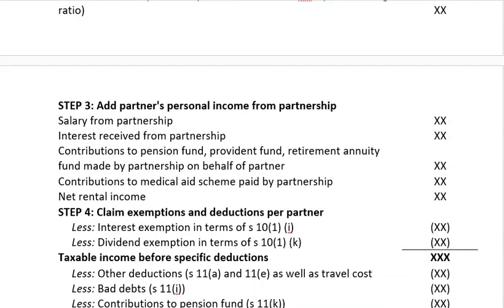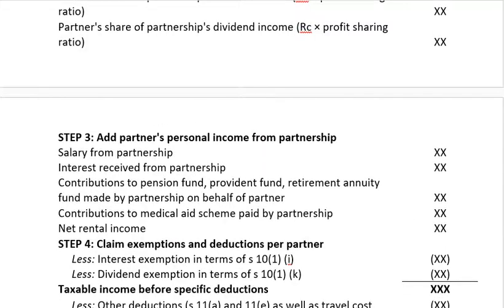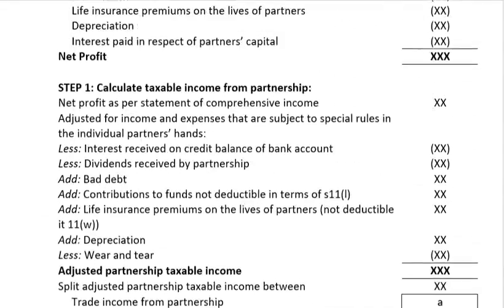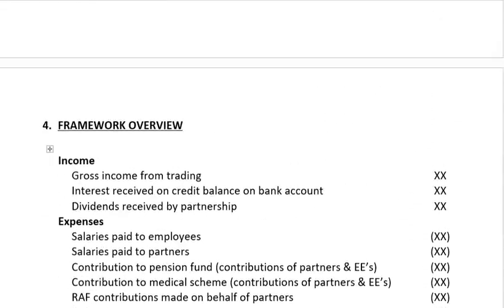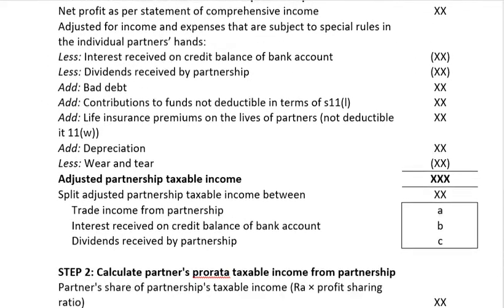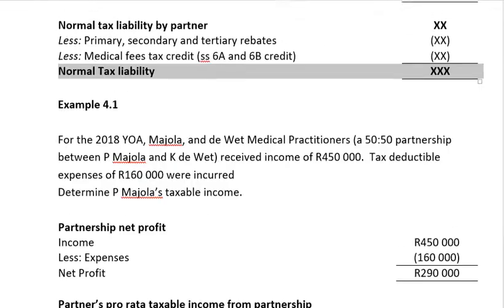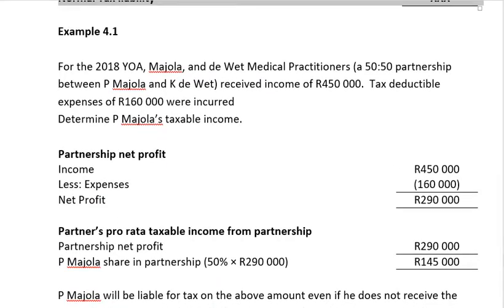Steps three and four need to be done for each individual partner. Steps one and two — the net profit — are done at the partnership level. So let's look at an example.